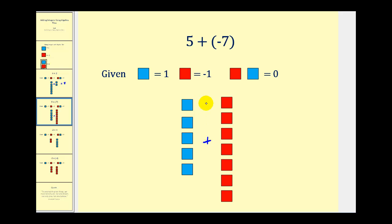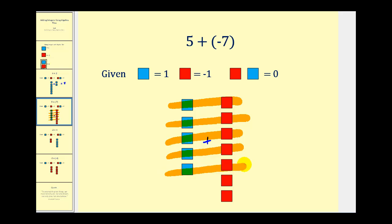The idea here is that when we combine one red and one blue square, the result would be zero. Pairing each blue with a red, each pair equals zero — giving us five zero pairs total. The end result is two red squares, which means our sum would be negative two.